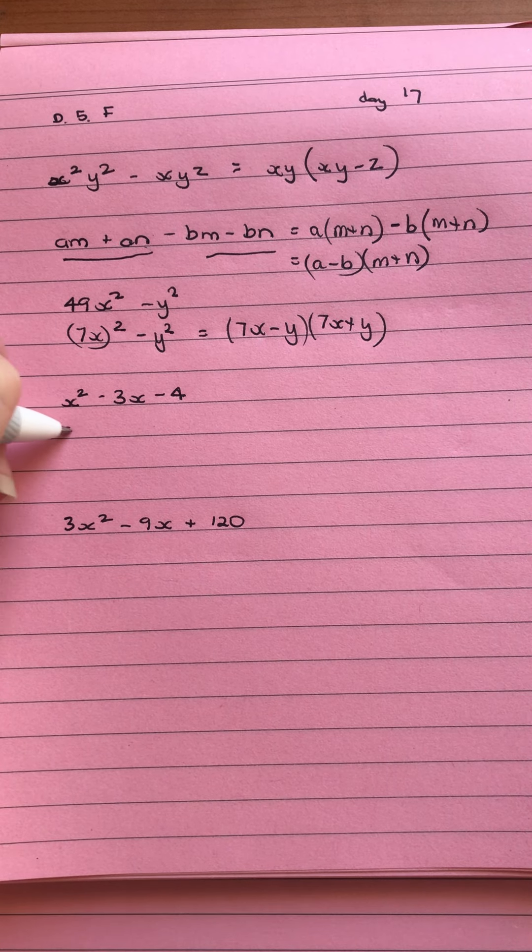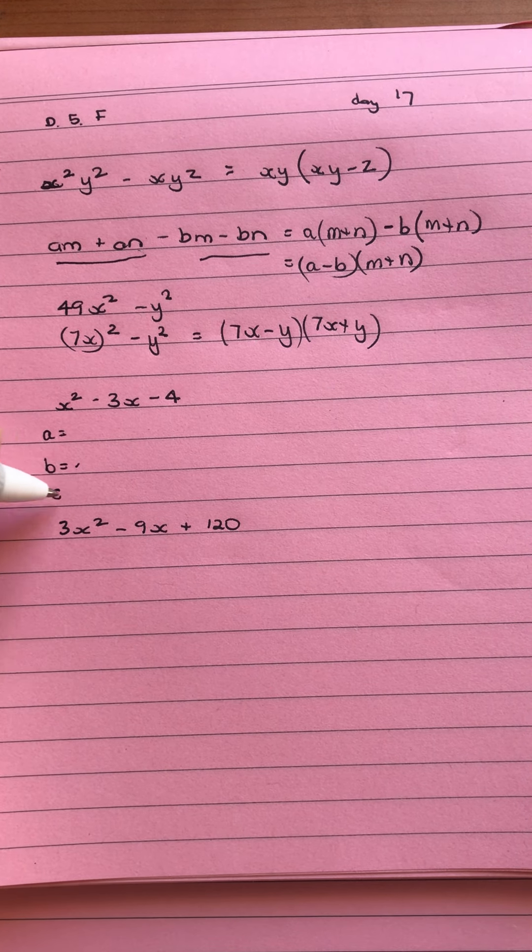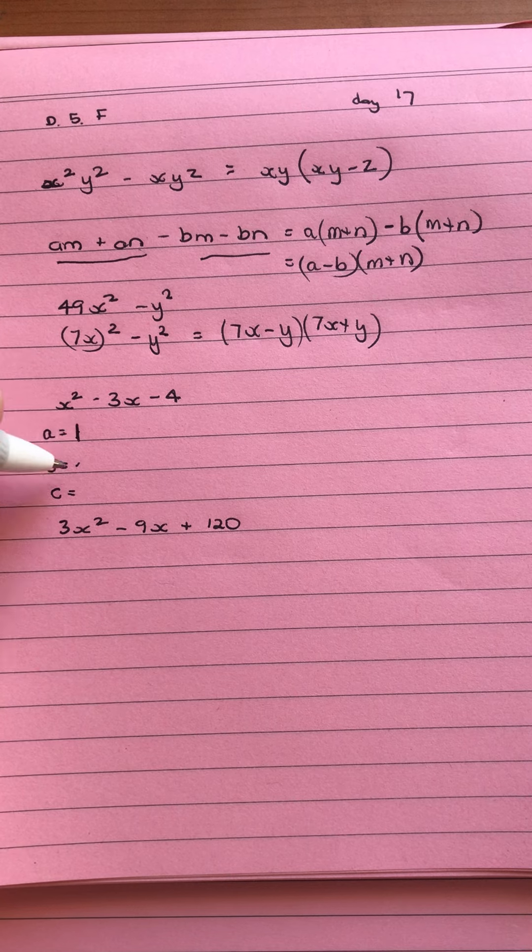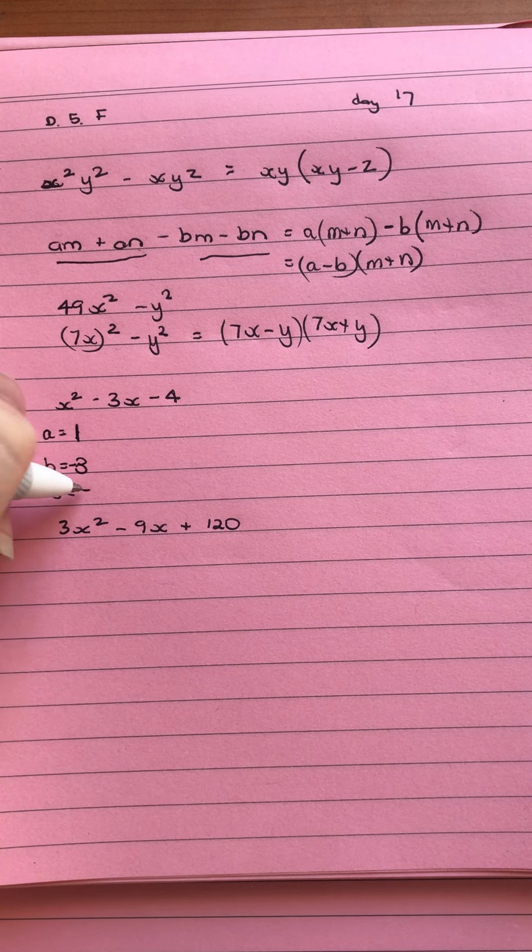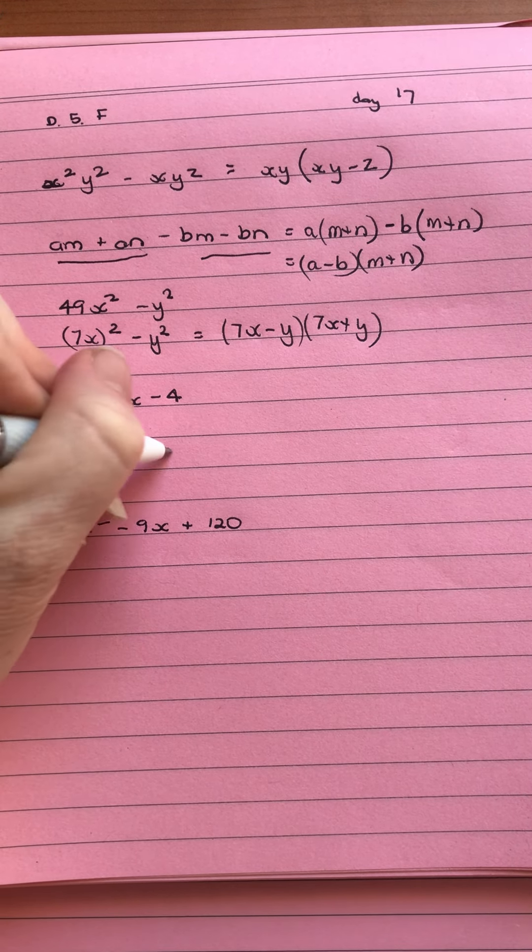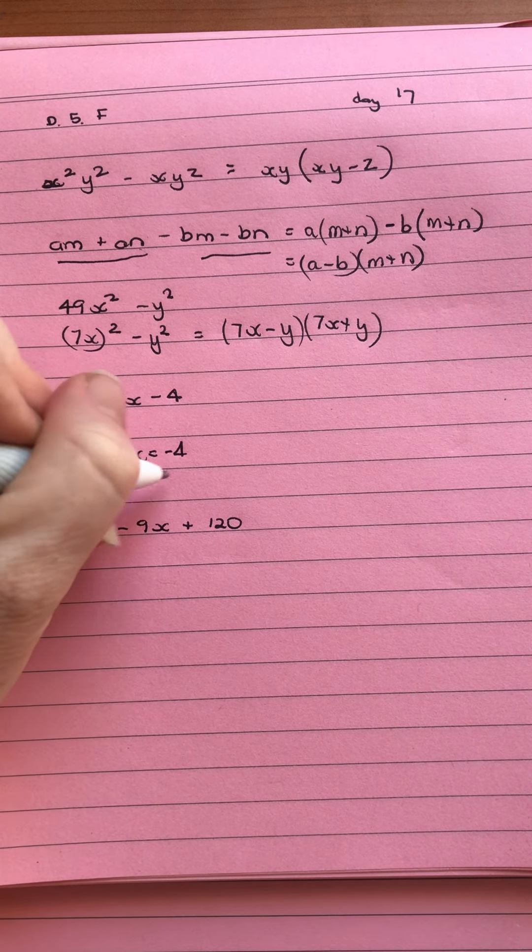For our third one, we've got our monic quadratic, where we've got a equals 1, b equals negative 3, c equals negative 4. So ac is negative 4, b is negative 3.